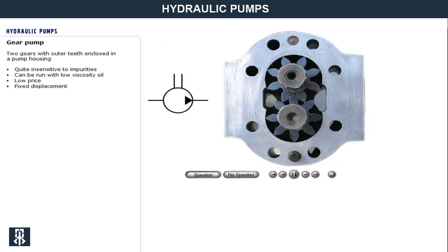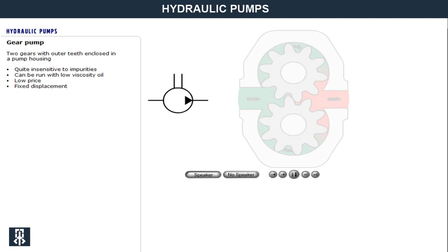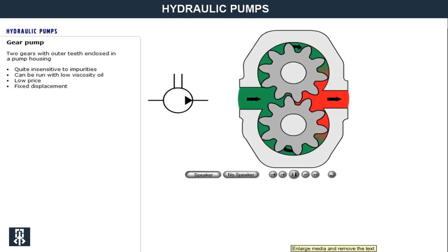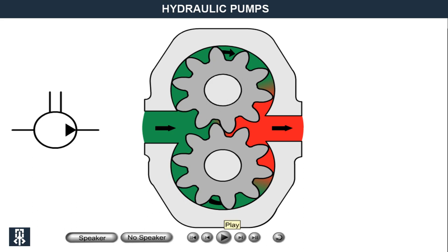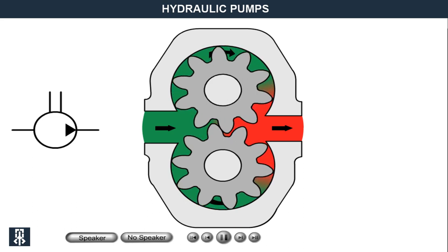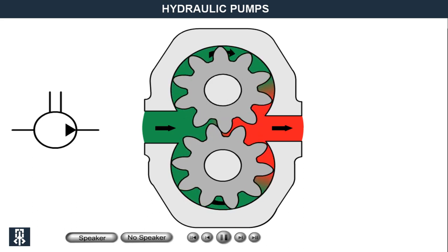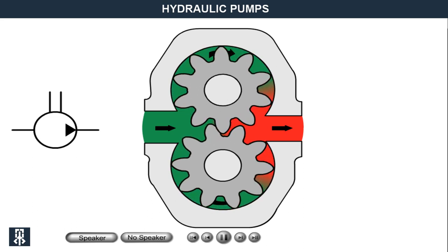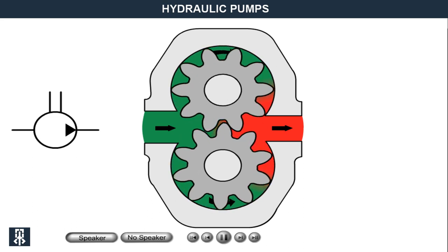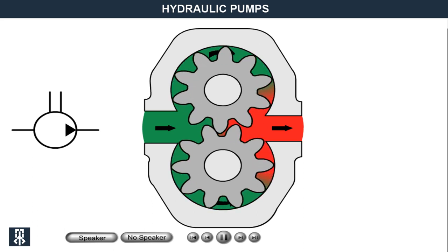Gear pump. A common type of pump with fixed displacement in a hydraulic system is the gear pump, with two gears with outer teeth enclosed in a pump housing. The oil moves in teeth spaces along the housing's inside from inlet to outlet. Depending on the pump's design, it gives a pulsating flow.